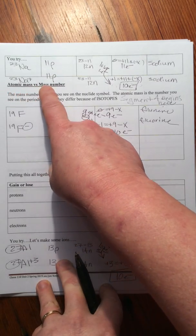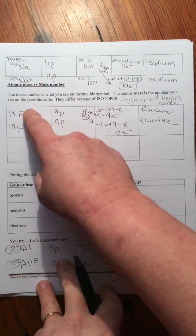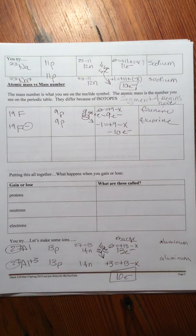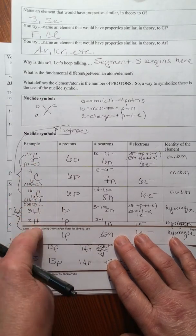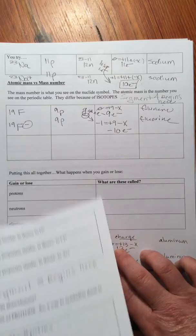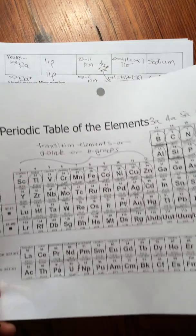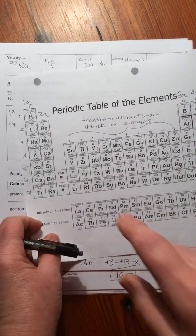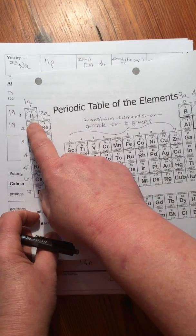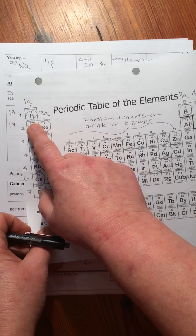Now atomic mass versus mass number. The mass number is what you see on the individual nuclide symbol. And as we saw on the other page, we can have isotopes of the same element. Now what you have on the periodic table is not the mass number but the atomic mass.